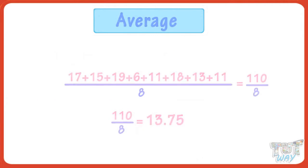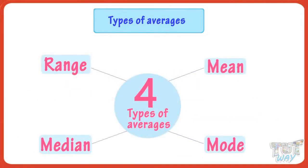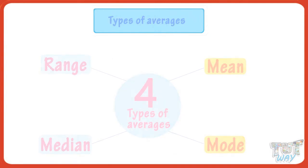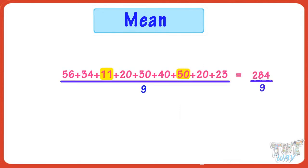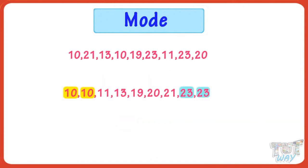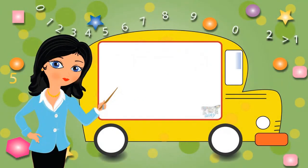So kids, today we learned what is average and we also learned how to find two types of average. Mean is the average where we add up all the numbers and then divide by the number of numbers. And the mode is the most common value in the list. Now go ahead and take a quiz to learn more.